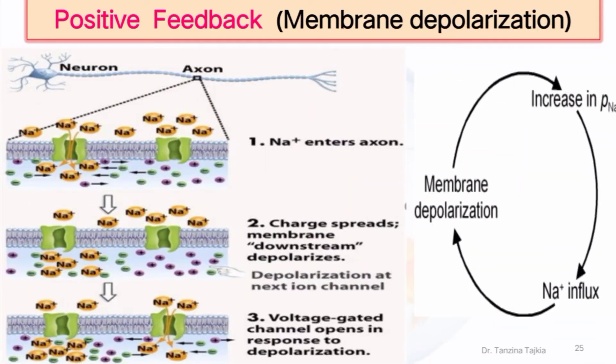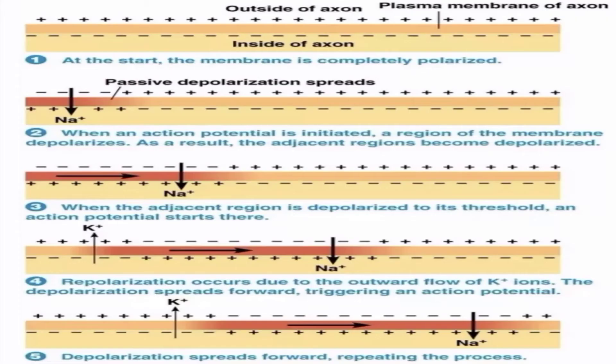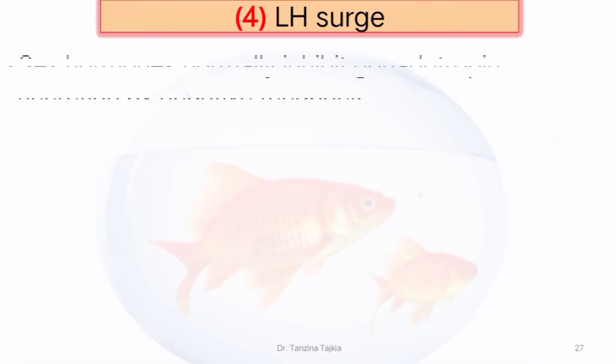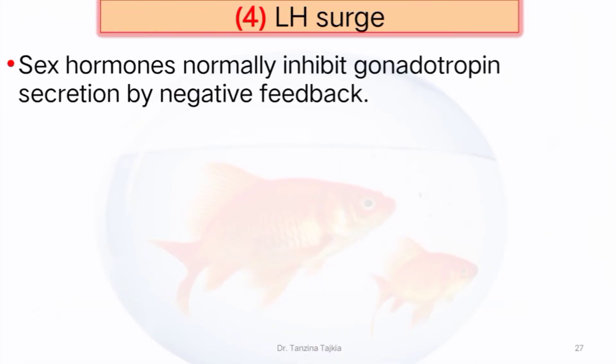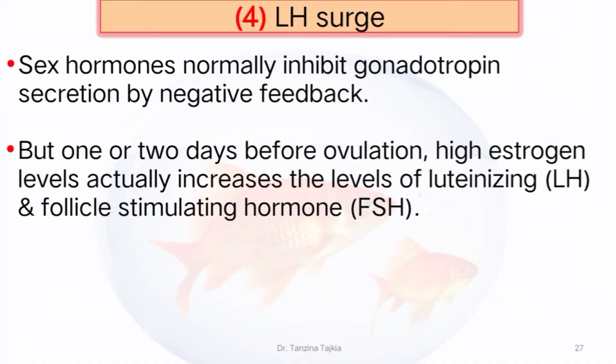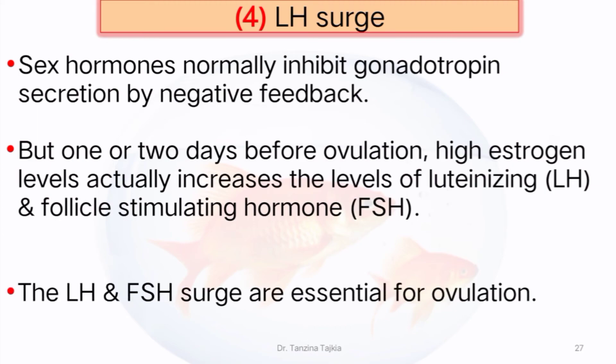Here is the generation of membrane depolarization. Then the LH surge: sex hormones normally inhibit gonadotropin secretion by negative feedback mechanism, but one or two days before ovulation, high estrogen levels actually increase the level of luteinizing hormone (LH) and follicle-stimulating hormone (FSH), which are essential for ovulation.